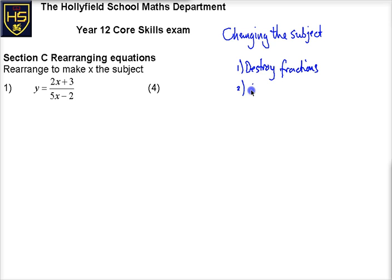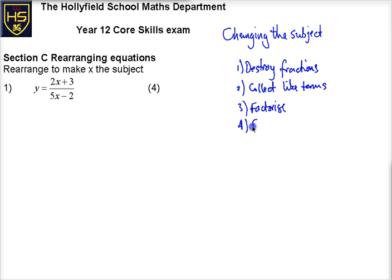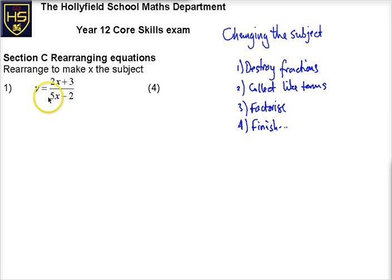The second step is then to collect like terms. Sometimes you might need to factorize to do that. And then finish off — finish what you need to do. So let's keep that in mind. First thing, let's destroy the fractions — let's multiply both sides by 5x minus 2.